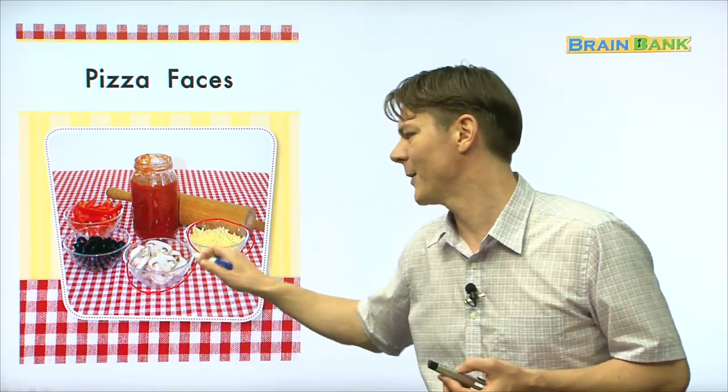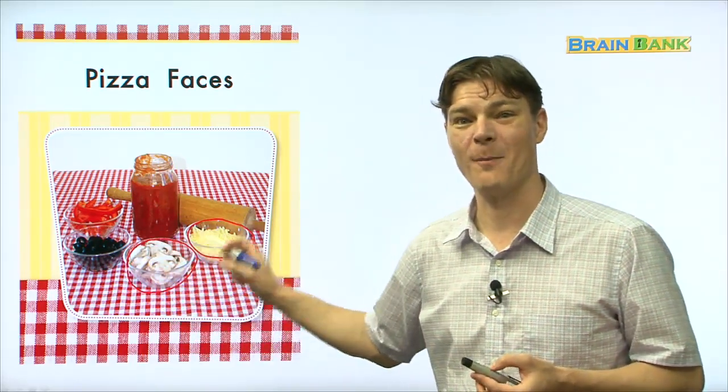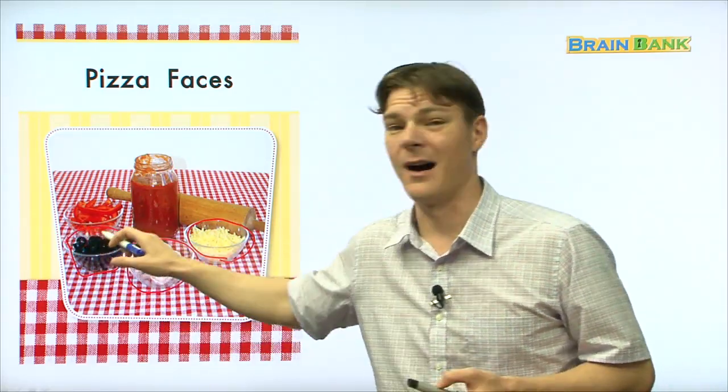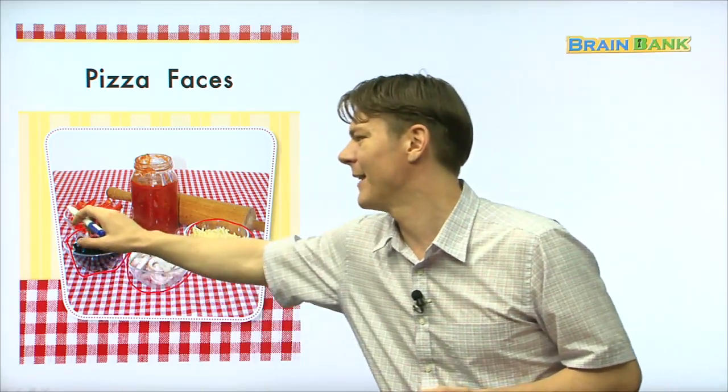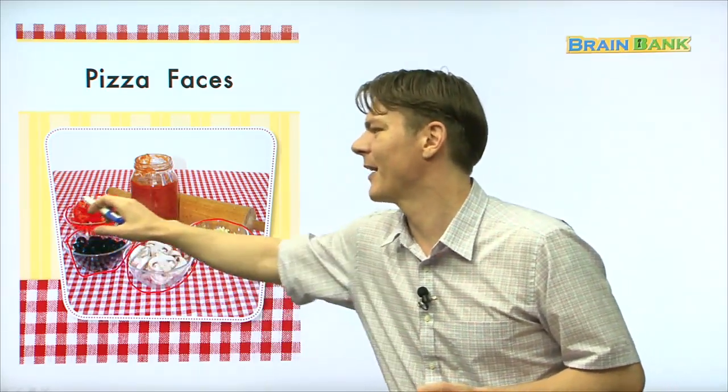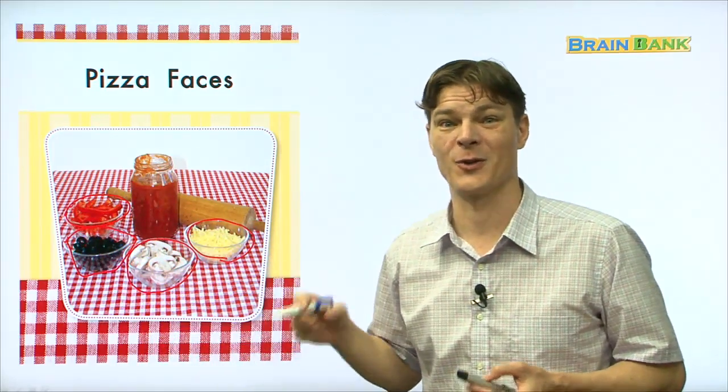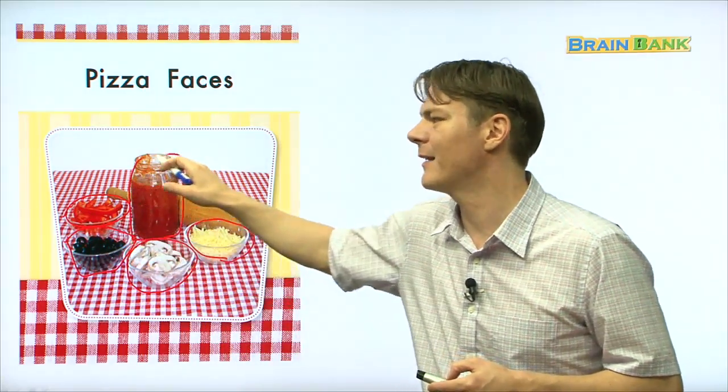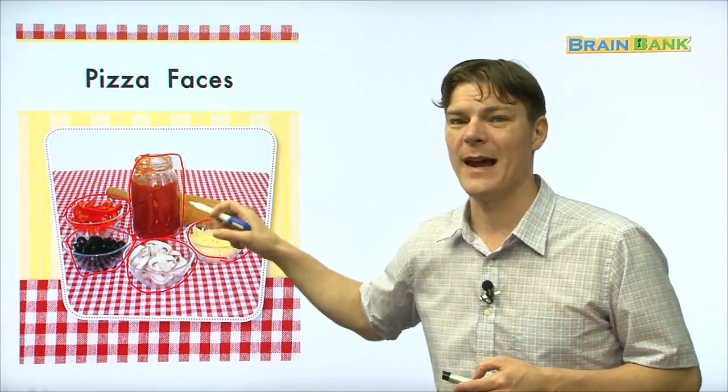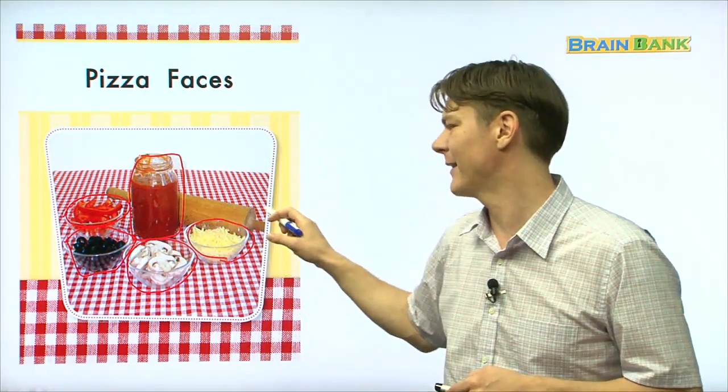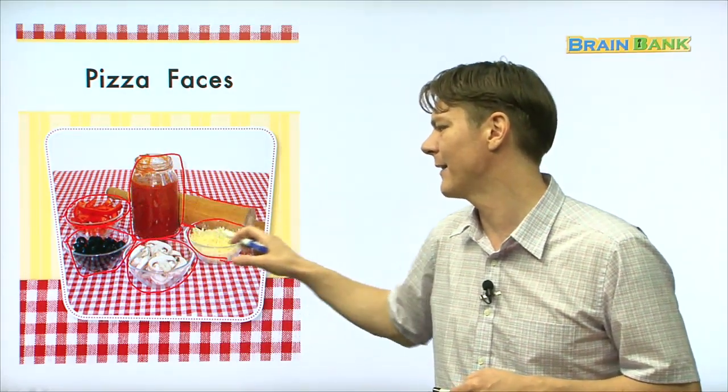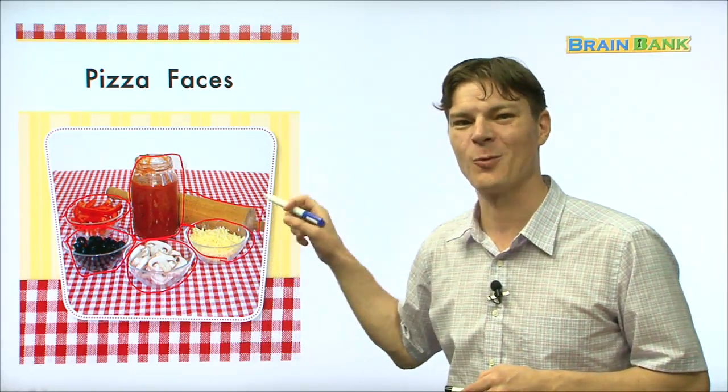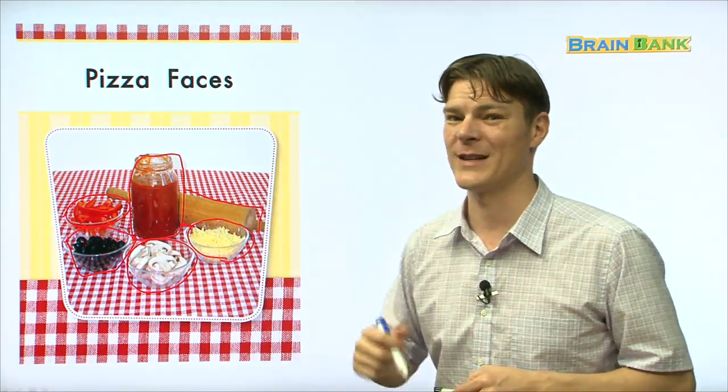Then here we have, do you know what this is? Those are mushrooms. Then here, we have some olives. And then right here, we have some red bell peppers, or just red peppers. And then here, in this big tall jar, we have some tomato sauce. And the last thing is this brown thing right here, which is called a rolling pin. And we're going to talk about all of these things today.